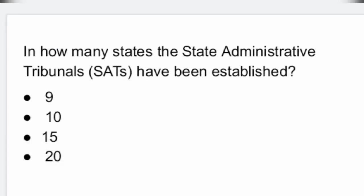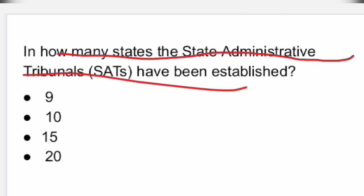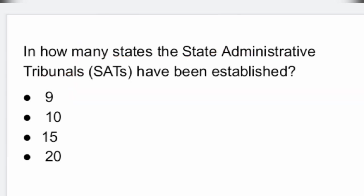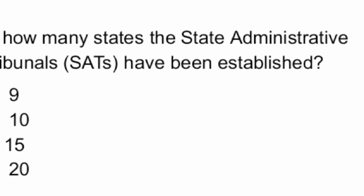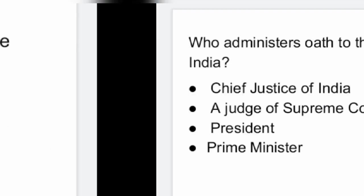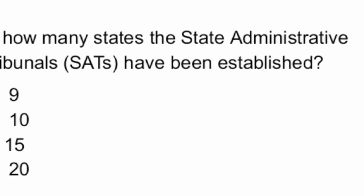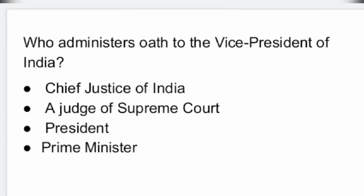Next question: in how many states have the State Administrative Tribunals been established? Altogether in nine states. Option 1 is the right answer.